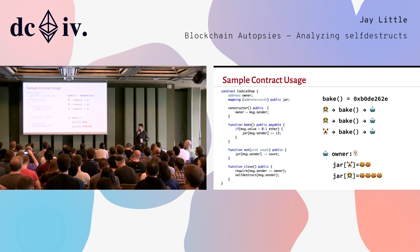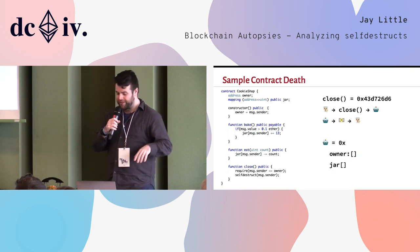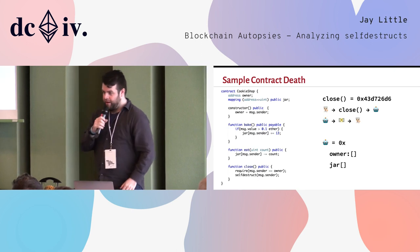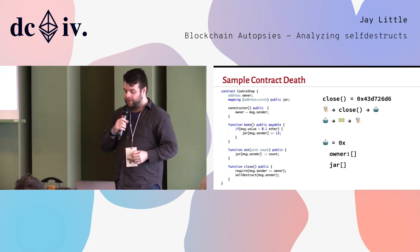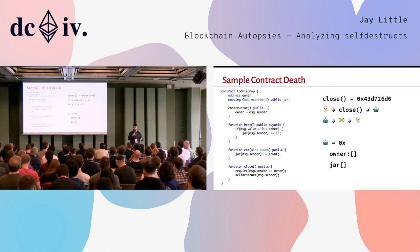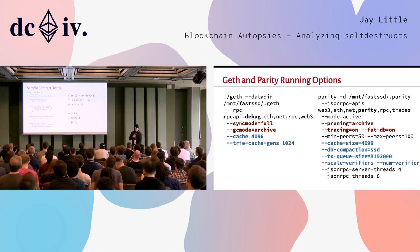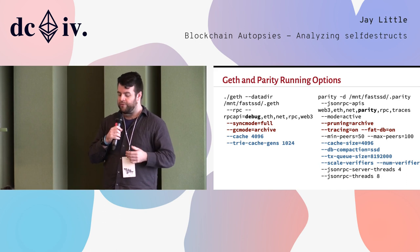In case anybody needs a brief refresher of what a self-destruct looks like: imagine you have some contract, people are using it, they're baking cookies, the owner's keeping track of who has what cookies. Then the owner wants to close up the shop, so they do a self-destruct. When they do this, the owner gets all the money collected by the shop, and the code and all the storage gets removed from all the Ethereum clients on the node. Because of that, the self-destruct is a type of internal transaction.